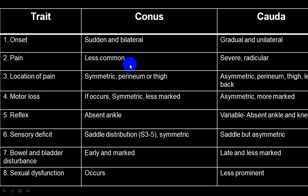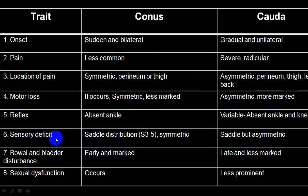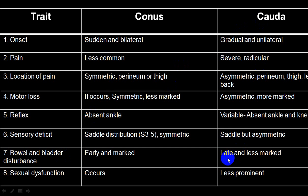Motor loss will be symmetrical in conus but less marked, while in cauda equina it is asymmetrical and more pronounced. Reflexes in conus: absence of ankle reflex (S1, S2), while in cauda equina both ankle and knee reflexes can be involved depending on the number of roots affected. In conus, sensory defects have a saddle distribution (S3 to S5), bilateral and symmetrical. In cauda equina, saddle distribution but asymmetrical. Bladder and bowel disturbances are early and marked in conus (S2, S3, S4), while in cauda equina they are less common and appear in late stages.